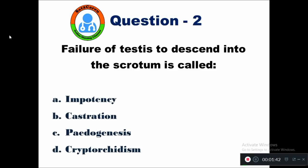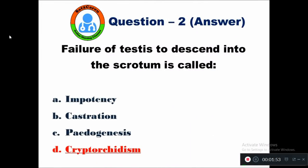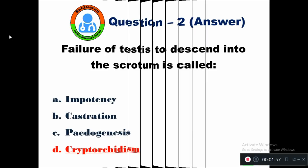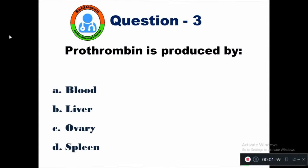Failure of testis to descend into the scrotum is called cryptorchidism. The right answer is cryptorchidism. Question 3: Prothrombin is produced by — option A blood, B liver, C ovary, D spleen.